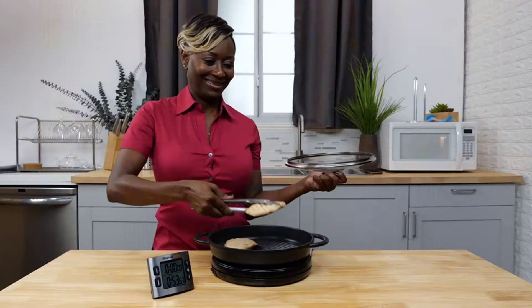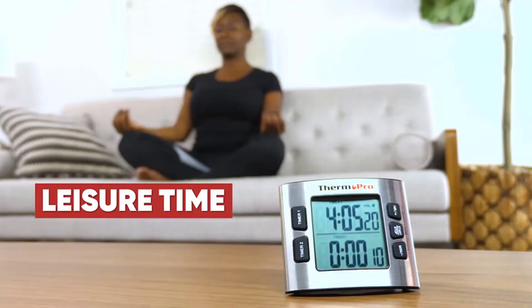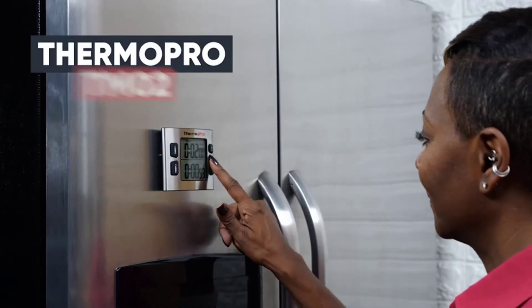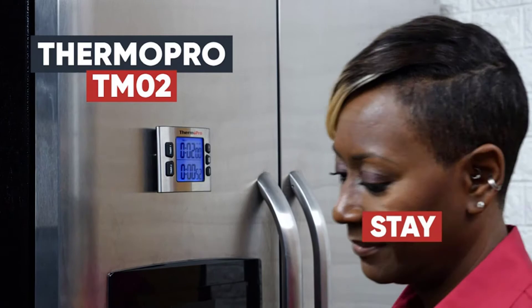With two separate countdowns, it's perfect for multitasking and measures a maximum of 23 hours and 59 minutes, so you can slow cook recipes like beef stew and brisket all day.